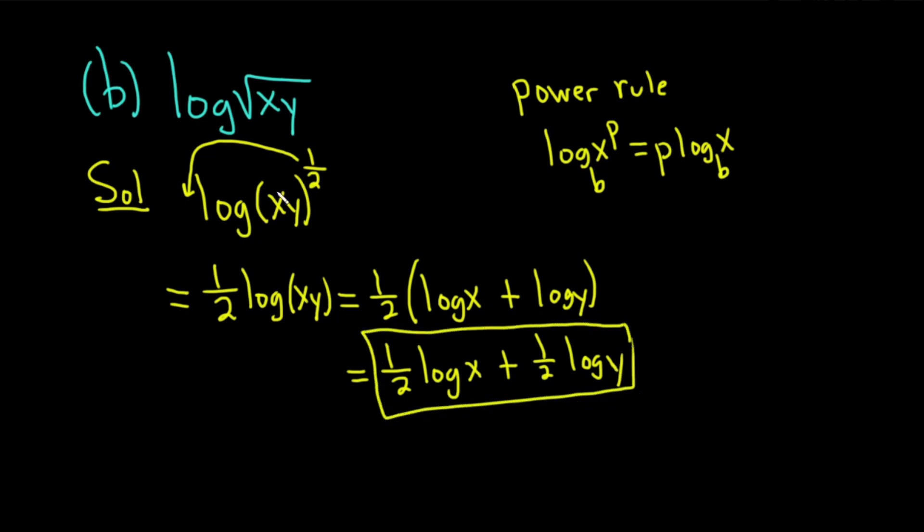And that would be the expanded form of the log of the square root of xy. So again, in this particular problem, we saw that square root. You turn it into a one-half, bring it down, then use the product rule. This is something that comes up a lot with square roots.